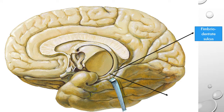Above the dentate gyrus, there is another circular sulcus called the fimbriodentate sulcus, which is present between the dentate gyrus and the fimbria.